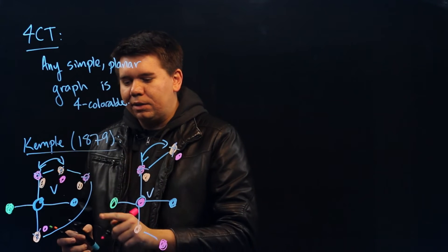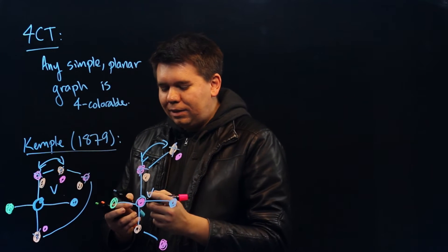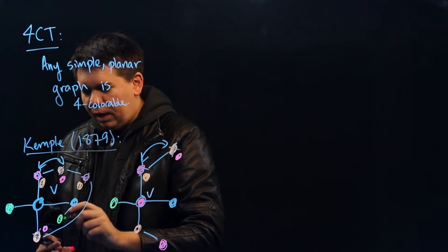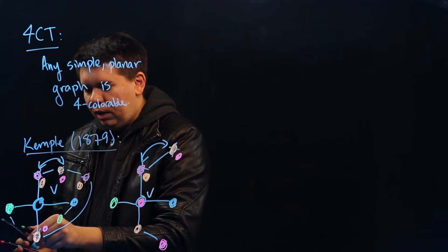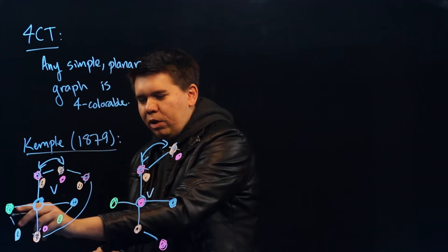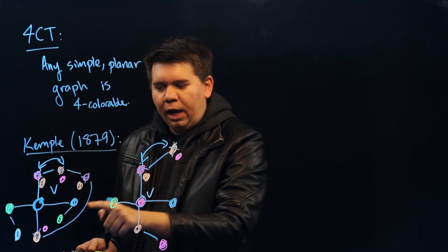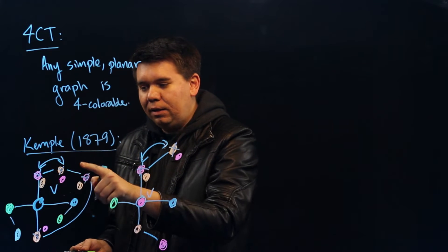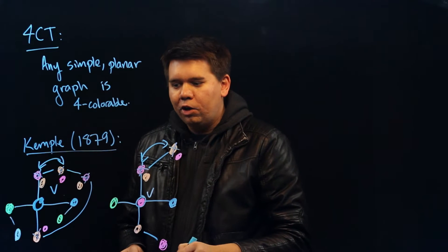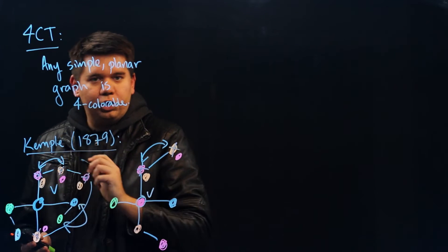Now we think about the other two vertices — the blue and the green. Are the blue and green connected by some chain of blue-greens? That blue could be connected to a green, and that green could be connected to some blue, and they may be connected to more greens and more blues. But those chains can't connect, because we have a wall between them of pinks and oranges. So in the plane, this blue-green chain is separated from that blue-green chain.